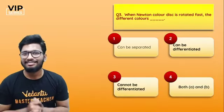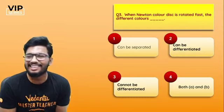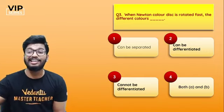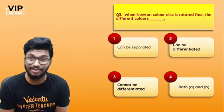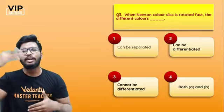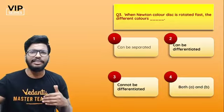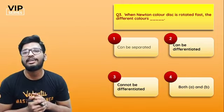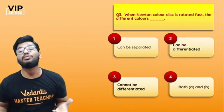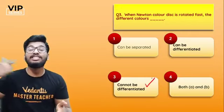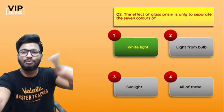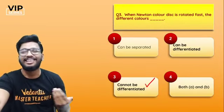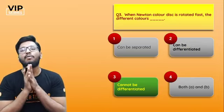Third question: when Newton's color disc is rotated fast, the different colors — can be separated, can be differentiated, cannot be differentiated, or both? Newton's disc is a disc divided into seven equal sections colored with VIBGYOR. When you rotate it really fast, it appears white — you're not able to differentiate the colors. This proves that white light is a combination of seven colors. The answer is: cannot be differentiated.